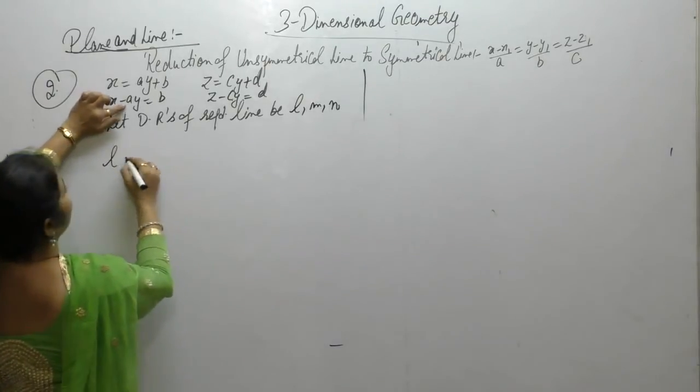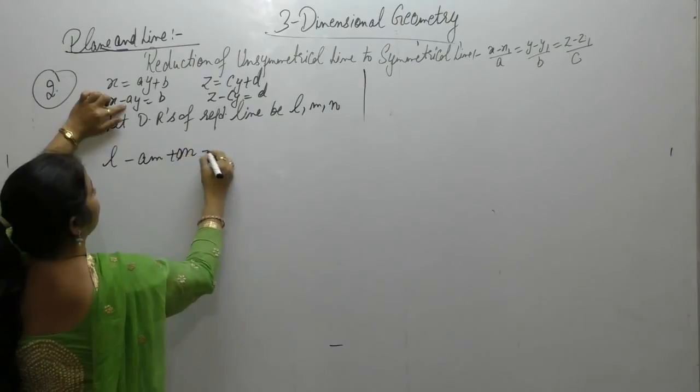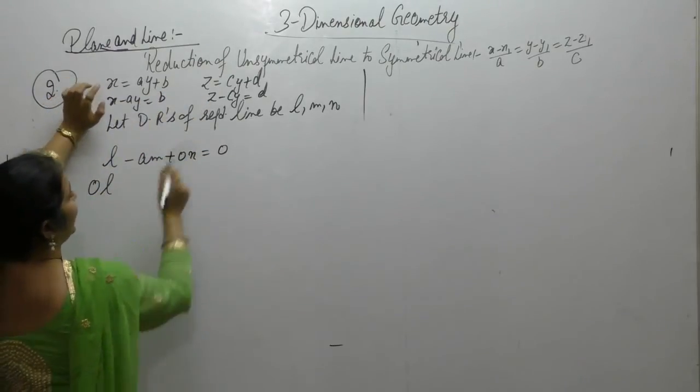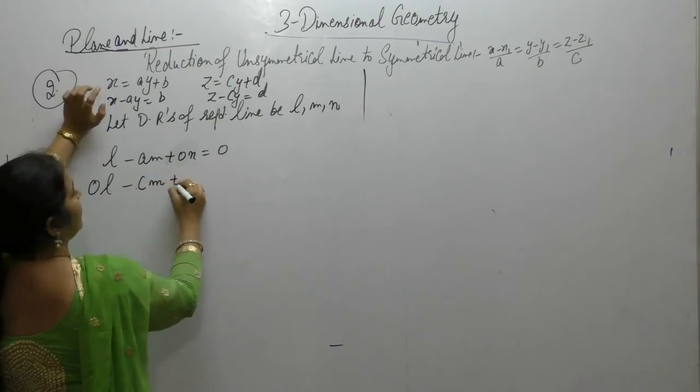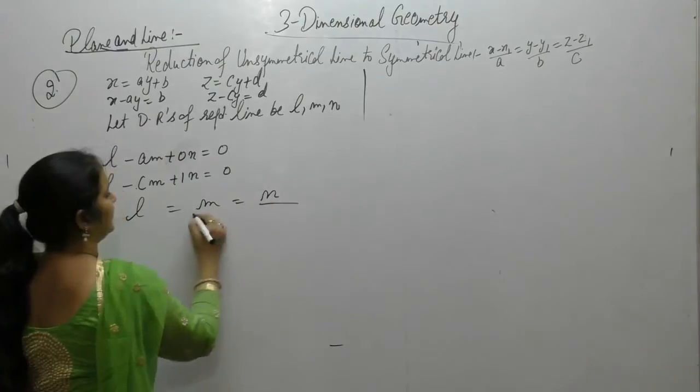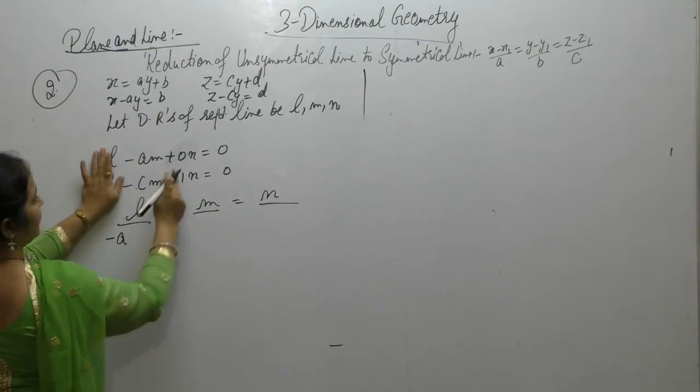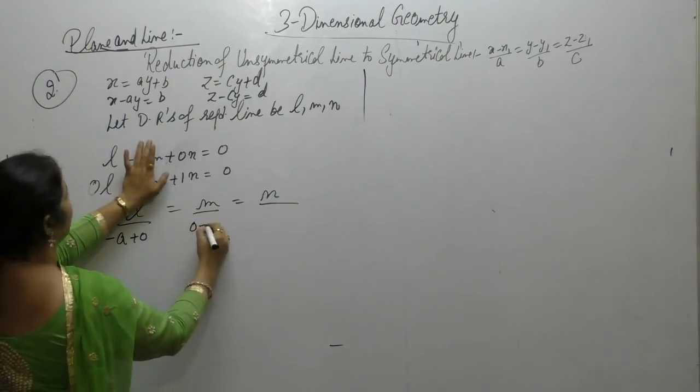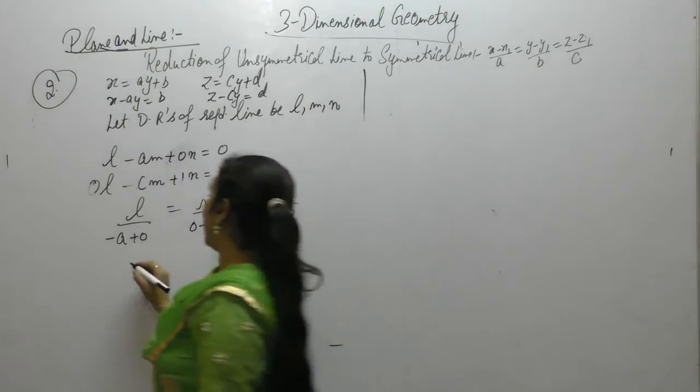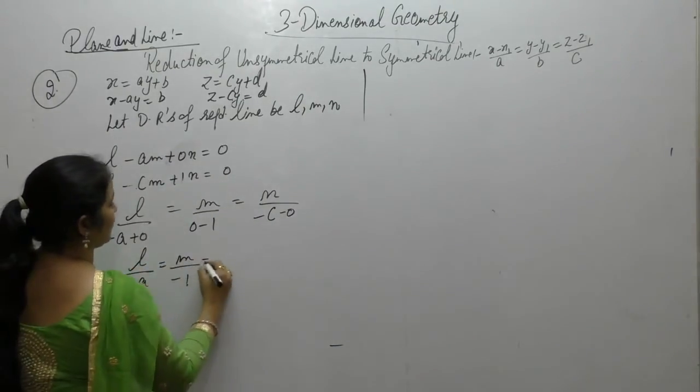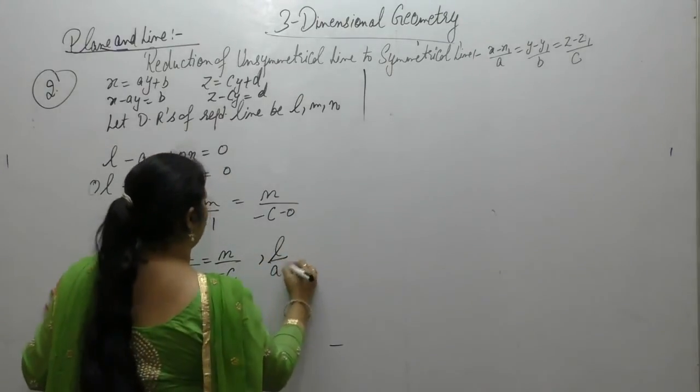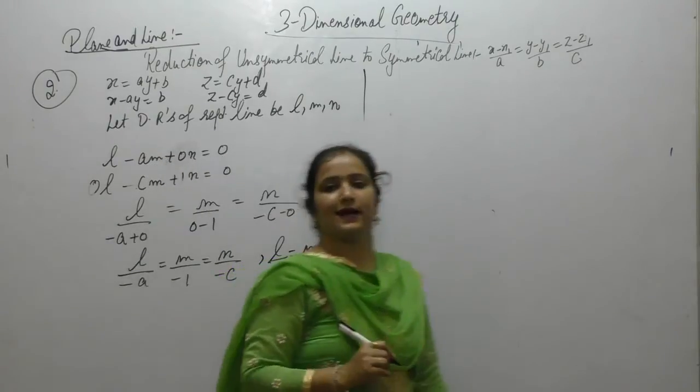Now, 1 into L minus A into M, 0 into N. Because we did not have coordinate of Z here. Here, x coordinate is not there, so 0 into L minus C into M plus 1 into N. Now, solve for the direction ratios L, M and N. L upon 1 into minus A plus 0, M, 0 minus 1 and N coordinate is minus C minus 0. So, L upon minus A, M upon minus 1 and N upon minus C. We can write it as L upon A, M upon 1, N upon C by cancelling the negative sign.